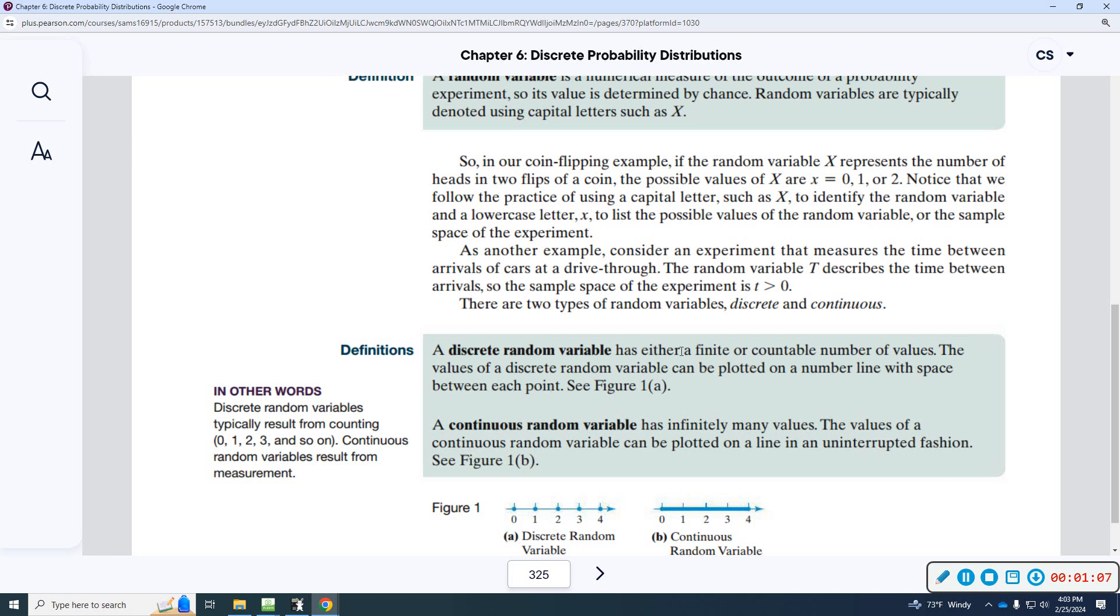So, discrete random variable is finite or countable number of values. What I normally say is whole numbers. When I think discrete, I'm thinking it can only be whole numbers. For example, if I said, how many family members do you have? You would either have 0, 1, 2, 3, 4, 5, some whole number. You wouldn't say, I have 5.3 family members. It's only going to be a whole number.